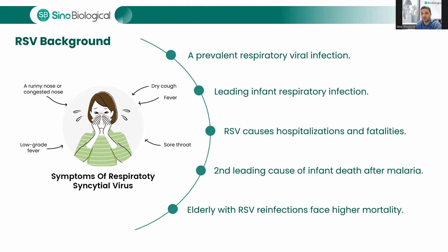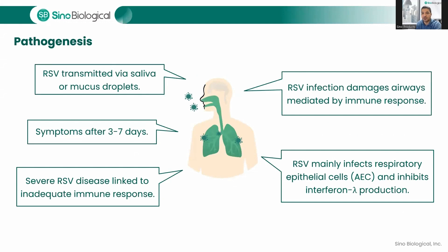RSV is transmitted through saliva or mucus droplets, leading to symptoms like fever, cold, and chest tightness that appear three to seven days after infection. The damage to the airway is caused primarily by the immune response rather than viral replication. RSV infects respiratory epithelial cells, or AECs, and inhibits the production of interferon gamma, compromising the antiviral immune response. Severe RSV disease is associated with an inadequate immune response and low viral load. Secondary bacterial infections are a concern as damaged airways become more vulnerable to bacterial colonization.